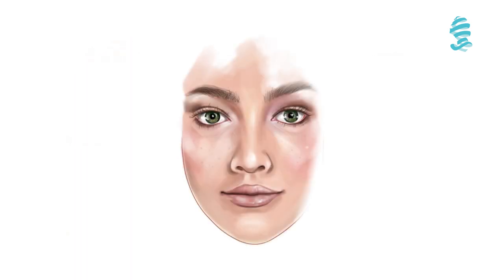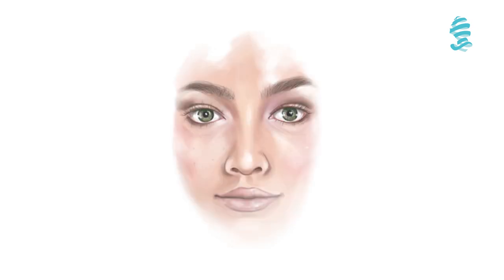Symmetry can be described as the axis of the nose — it should be a line passing from the midline. When we look at the width, ideally there should be two curvilinear lines passing on the dorsum of the nose, called the brow-tip aesthetic line.